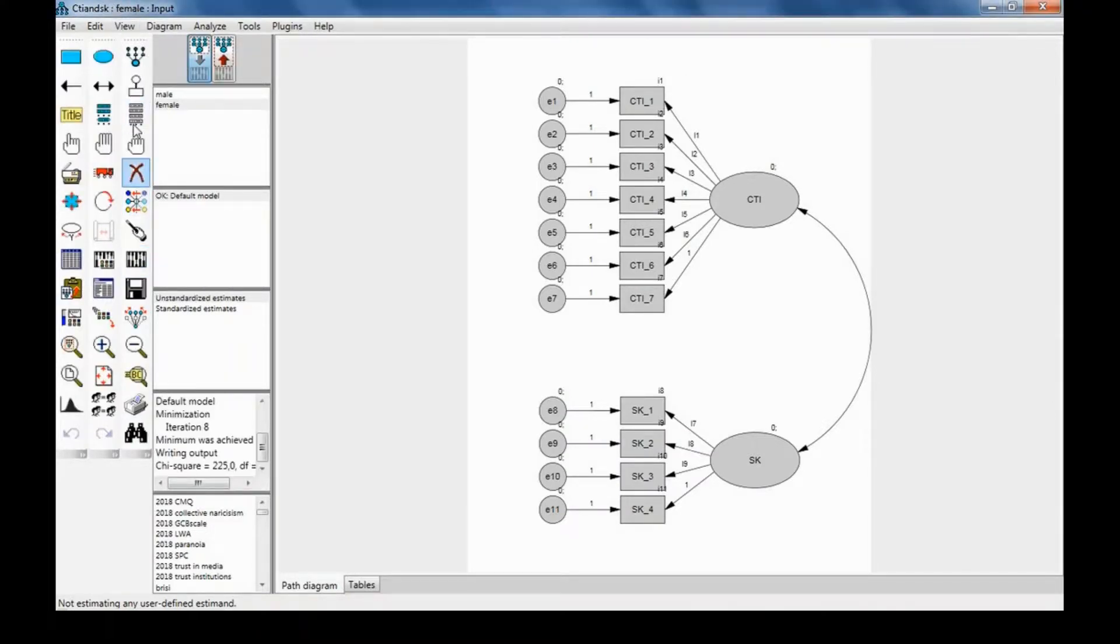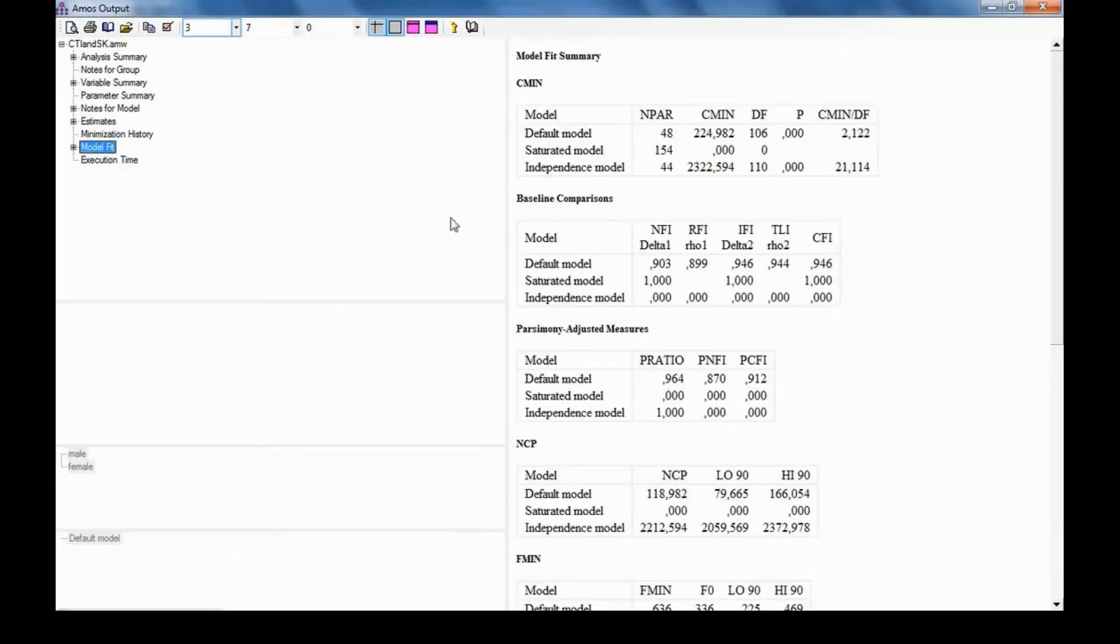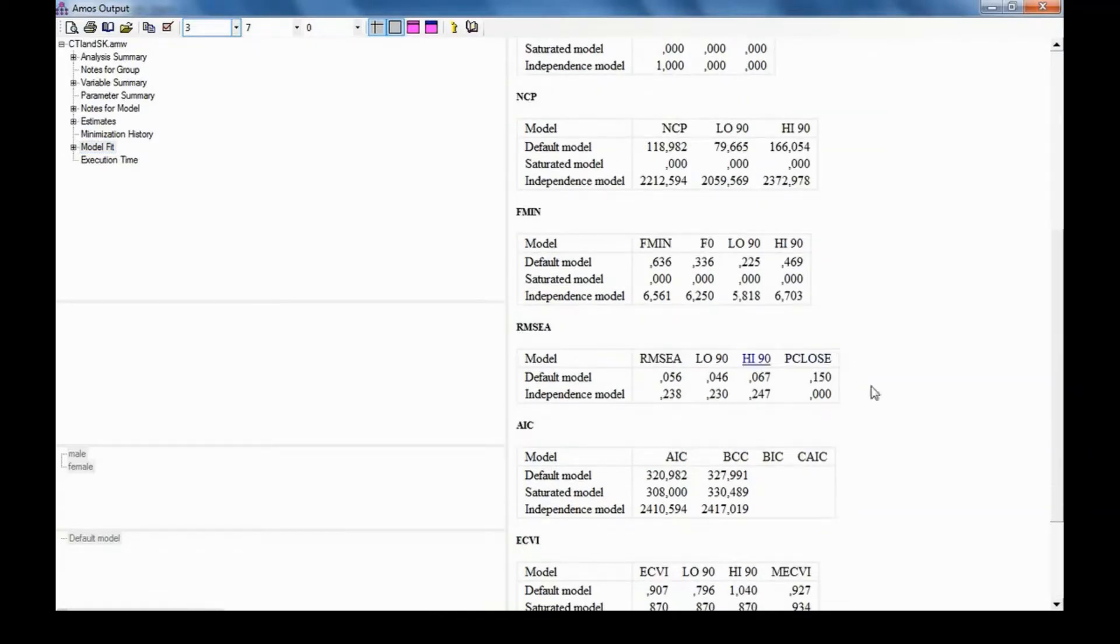And request the output and go to Model Fit. So we are looking at the chi-square and the degrees of freedom, the comparative fit index, the Tucker-Lewis index, and the root-mean-square error of approximation. So I'm going to write down these values in the table.